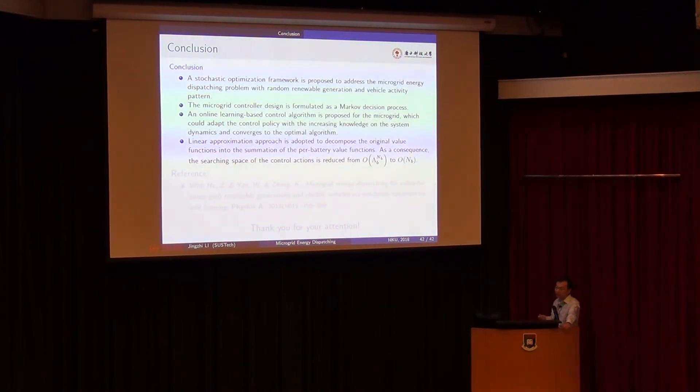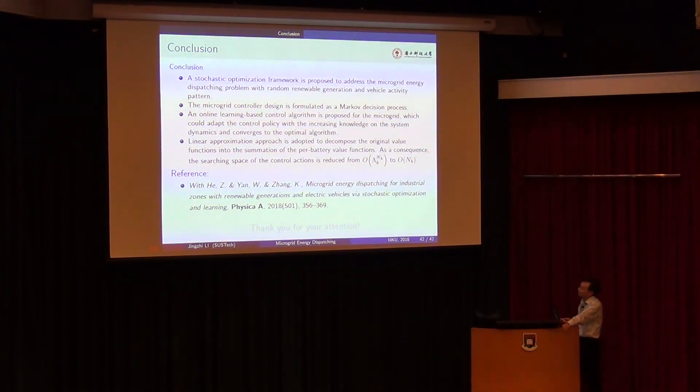Let's come to our conclusion. We have formulated our microgrid energy dispatching problem as a stochastic optimization framework. We formulated as a Markov decision process, MDP. And we propose an online learning-based control policy with increasing knowledge. Actually, we keep record of the previous one. And this memory will be recorded in the transition kernel within our matrix. And to accelerate this method, we have decomposed this cost function into its linear parts and use linear approximation approaches to decompose this cost function into the summation of per battery value functions. And then we can, in such a case, we can reduce this dimension from order of exponential to the order of polynomials. And here's the reference of this work. And thank you for your attention.